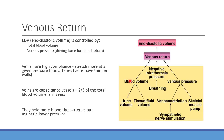Blood volume can be modified by drinking fluids — drinking a liter of water increases blood volume once absorbed — or by producing urine to remove it. If a patient is hypervolemic, we can increase their urine volume using diuretics. Caffeine is a mild diuretic — most students are probably consuming one right now — which decreases blood volume by increasing urine production.